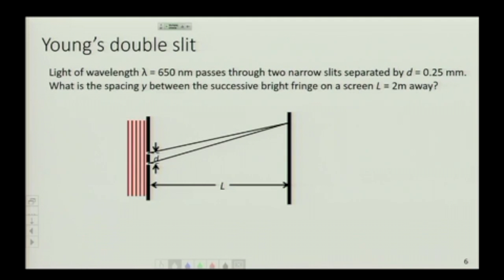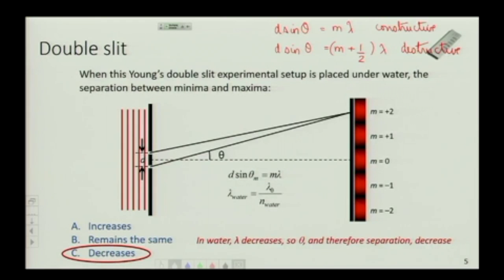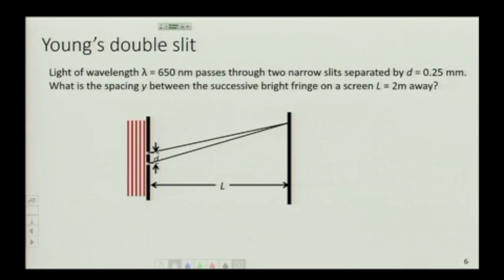But if I ask you, if you look at this pattern, it's drawn such that it looks very even, right? Is that true or is that just the way I've drawn it? So let's figure out the spacing between successive fringes, not just between the zeroth order fringe and any other bright fringe, but between successive fringes.